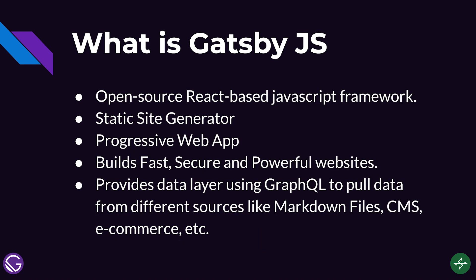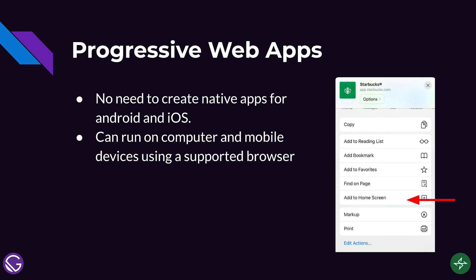Next, Gatsby is a static site generator. From the name itself, Gatsby creates static files for HTML, CSS, JavaScript, and other website files. This means there's no need to call any server to load the page. For example, if you are using WordPress, the contents are saved in the database, so retrieving the data creates latency. Next is Progressive Web Apps, which is also an advantage because you don't need to create a native app for Android and iOS. Progressive Web Apps can run on both computers and mobile devices that have a supported browser, and you just click 'Add to Home Screen' and it will become like a native app.